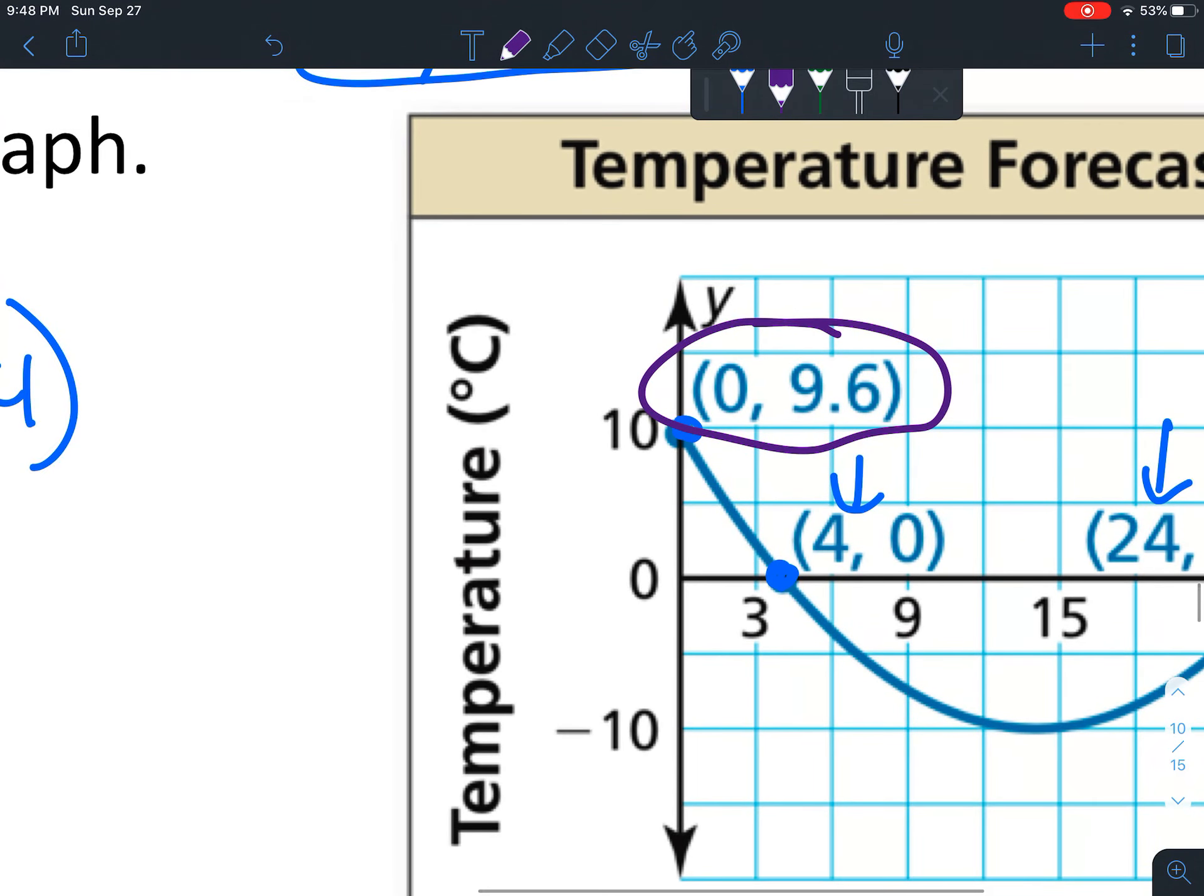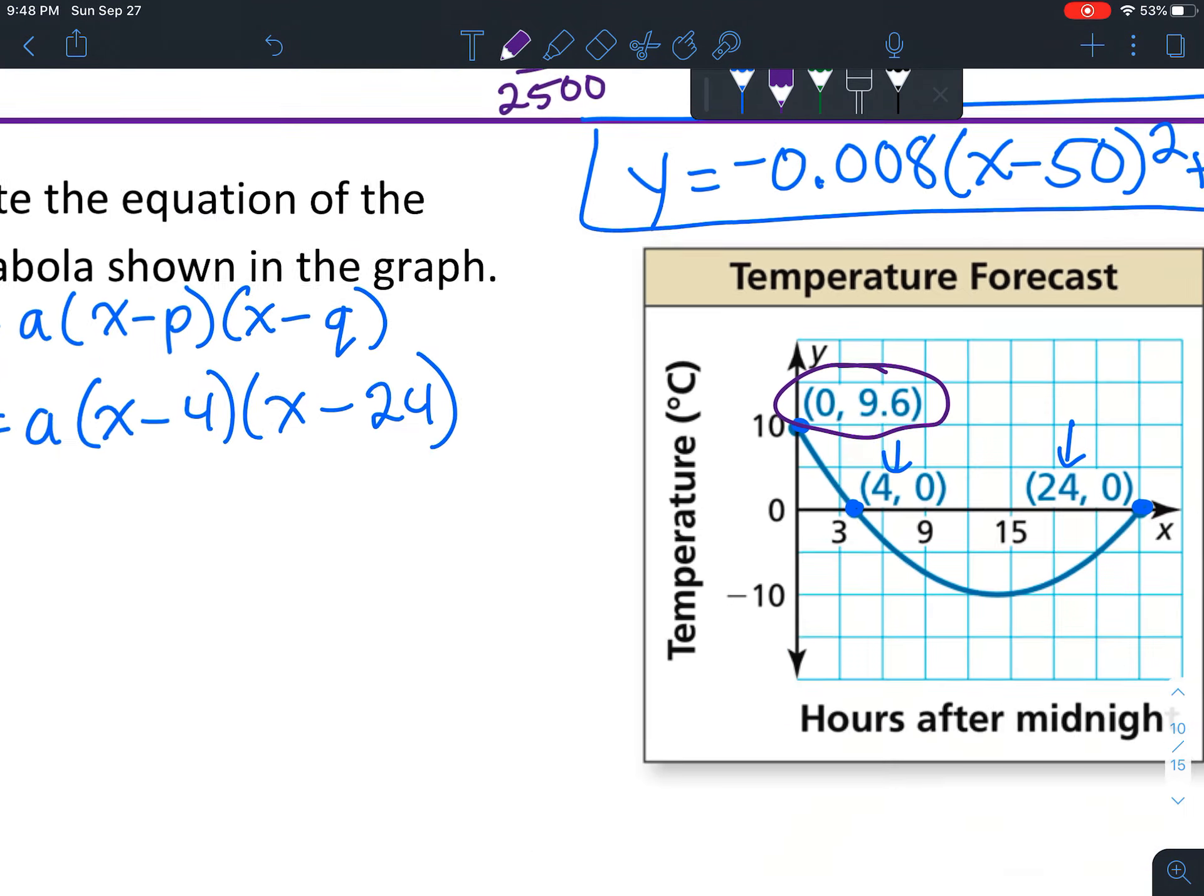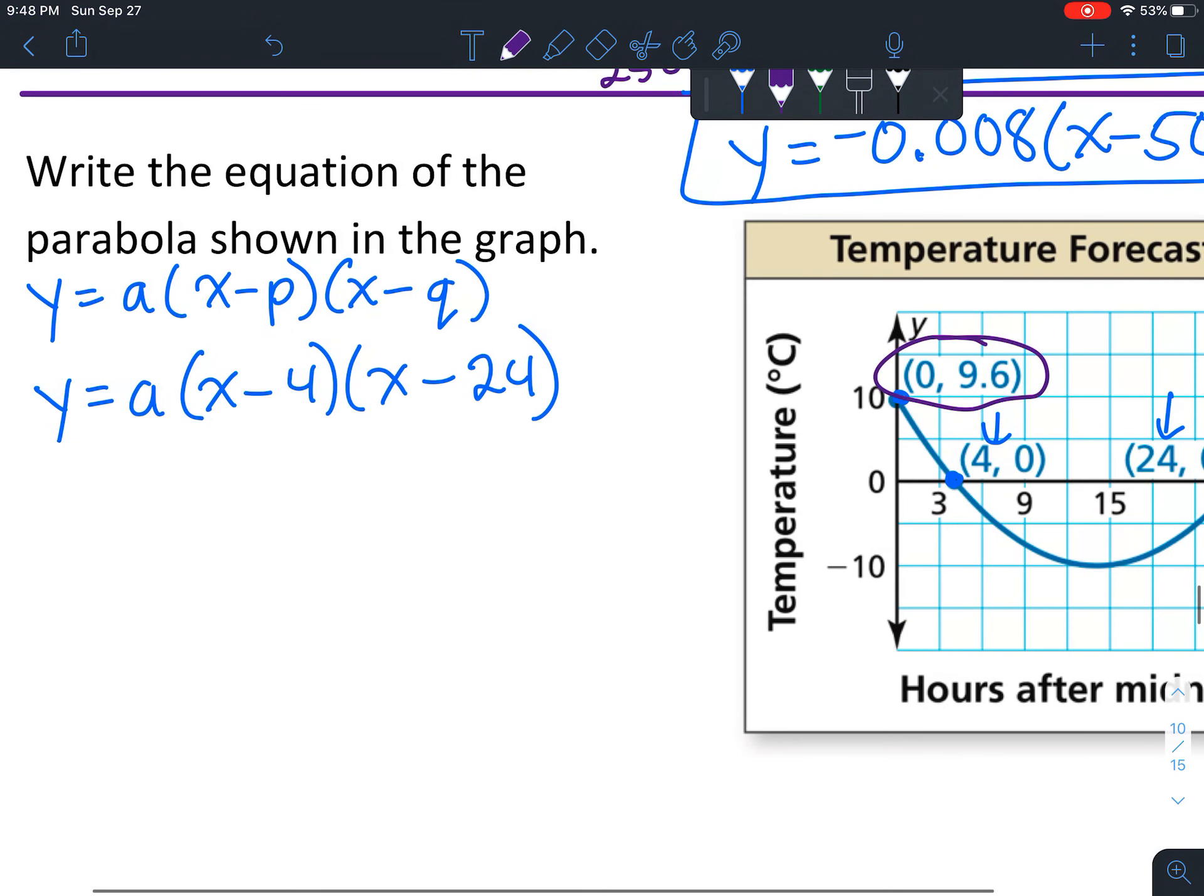In this specific one, we're going to borrow this point right here because that is a point of that equation, so it should work to help us find what a is. Similar to last time, we're not going to write y - we're going to use y from right here. This is x and this is y, so we've got 9.6 = a(0 - 4)(0 - 24).